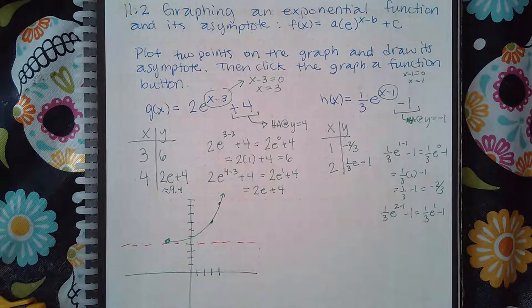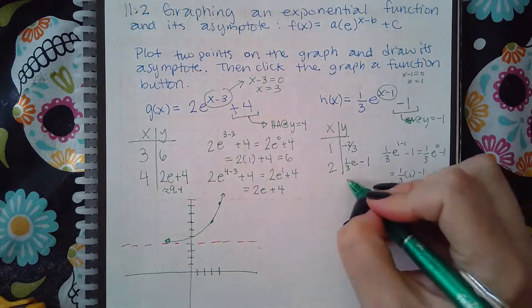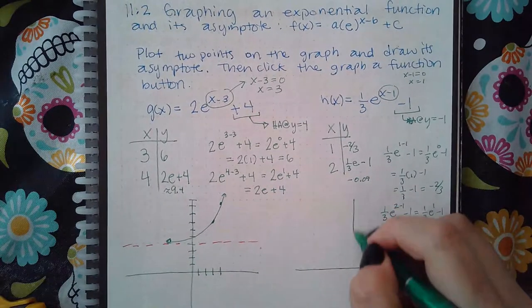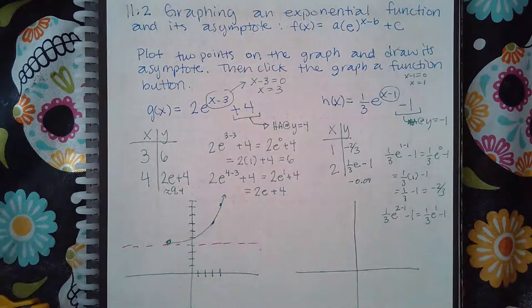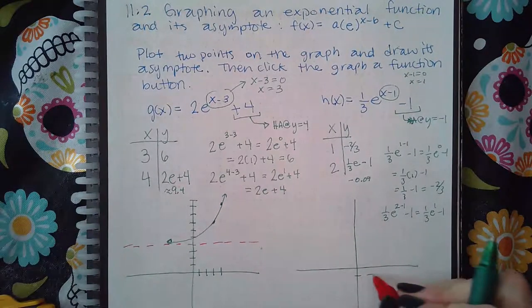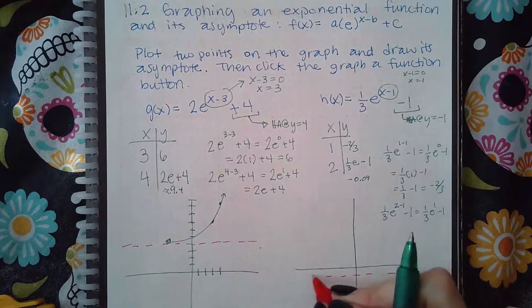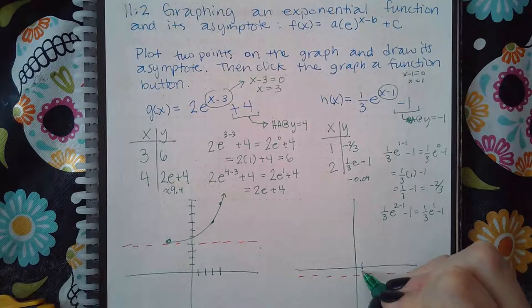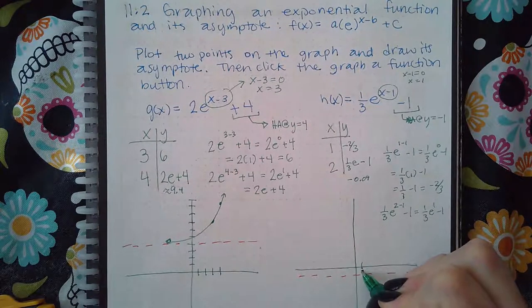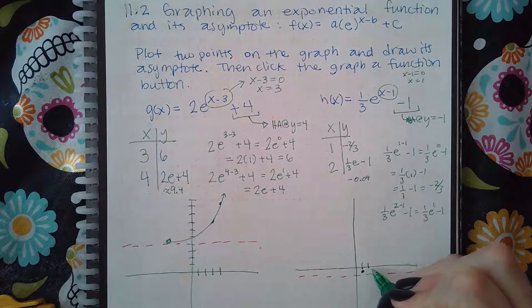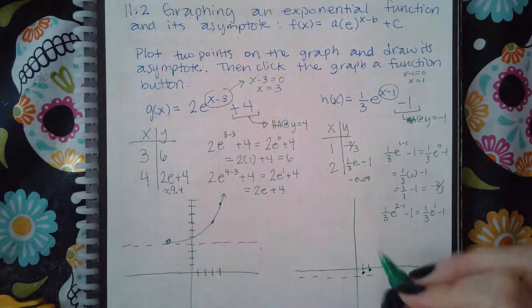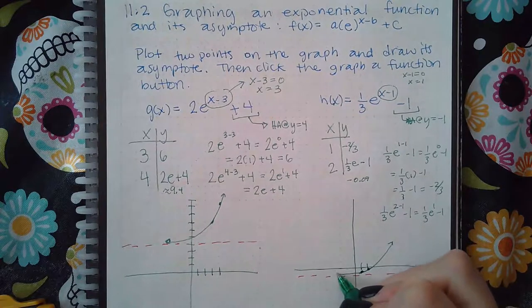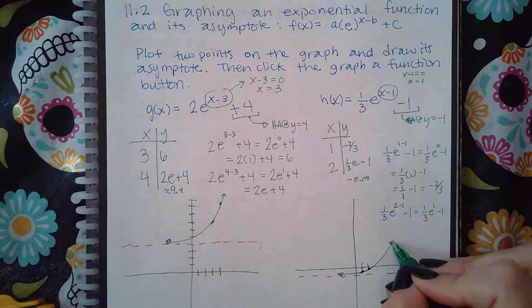And so the computer will automatically know that's about negative zero point zero nine. So when you graph it, your horizontal asymptote is now at negative one. And at one you're at negative two thirds, which is about negative point six. And then at two you're at negative point zero nine, which is right there. So then this is looking like this, getting real close to that value over there.